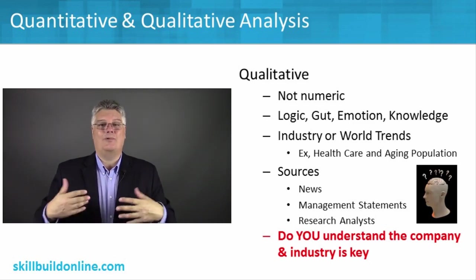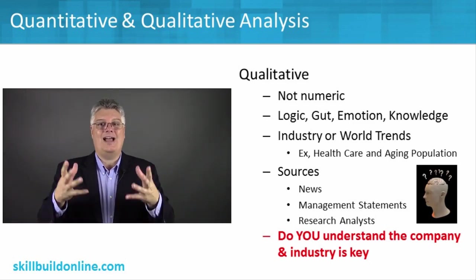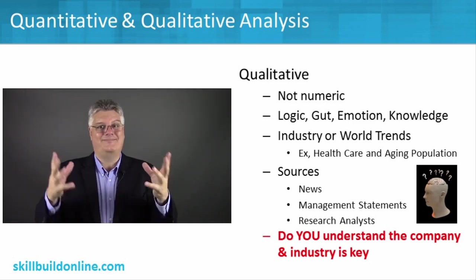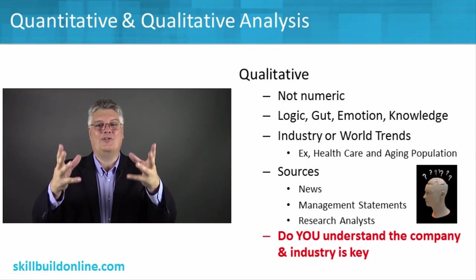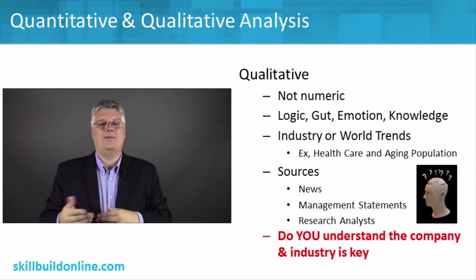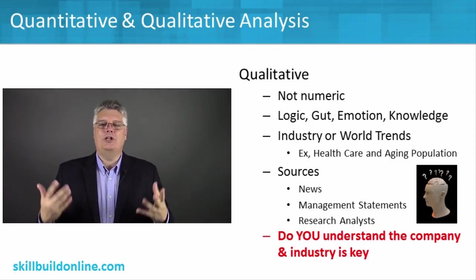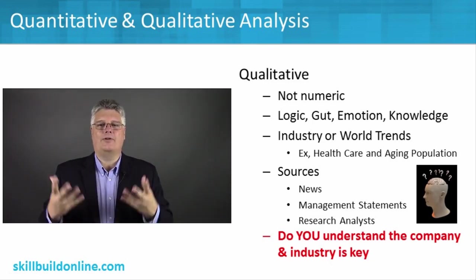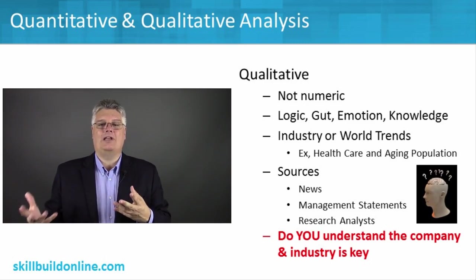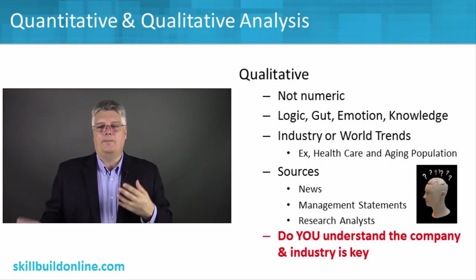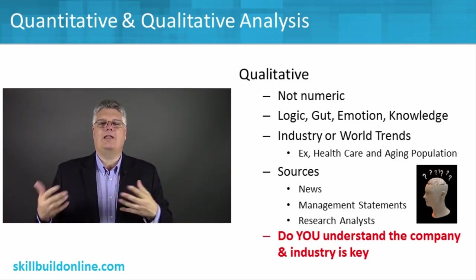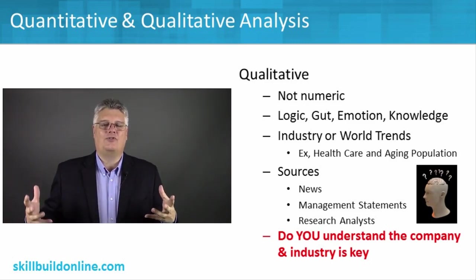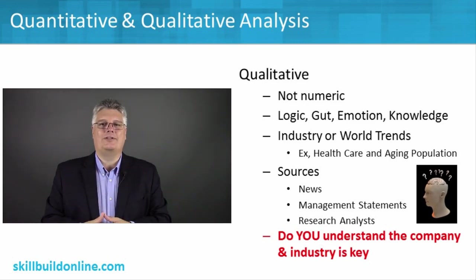Chasing hot stocks can usually lead to trouble, because once there's a hot stock out there, people know about it, the price has been driven up, and it may or may not continue to go up. So qualitative information is that overall non-numeric information you're gathering, and you use it together with the quantitative data from balance sheets, income statements, and statements of cash flows to make your choices.